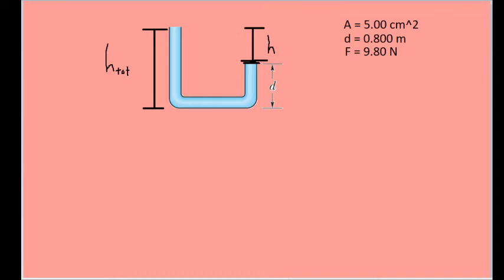We are already given the height D of the right arm of the tube, so let's call the missing height here between the top of the right arm and the top of the left arm vertically H. We can now see that the total height that we're looking for is going to be equal to D plus H.